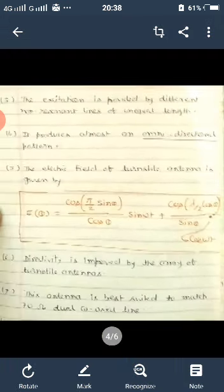The electric field of turnstile antenna is given by this equation: E theta equals cos(π/2 sin θ) / cos θ sin(ωt) plus cos(λ/2 cos θ) / sin θ and then in product cos(ωt).